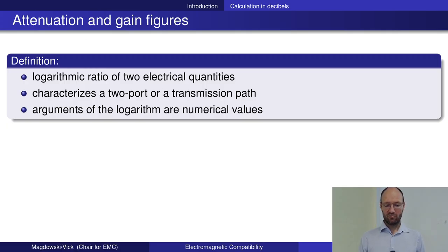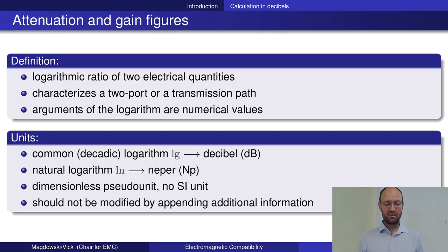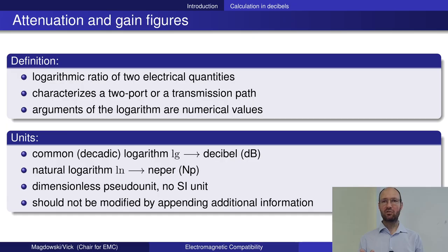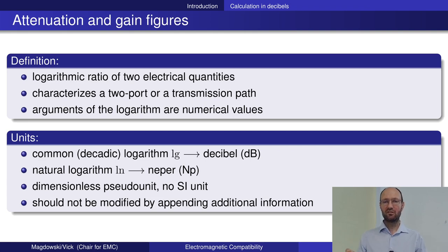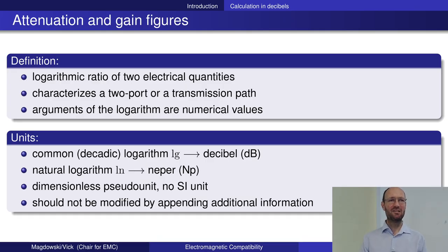It's common to use the decadic logarithm; if you use the natural logarithm, the result would be neper instead of decibel. Because you divide power by power, you get a dimensionless, unitless quantity — and you can only calculate a logarithm of a dimensionless number, not of a unit. So the result is unitless, and even after multiplying by 10 it remains unitless. We still give it the unit dB, but dB is not really a unit — it's a kind of pseudo unit, and calculating in dB can sometimes be strange.